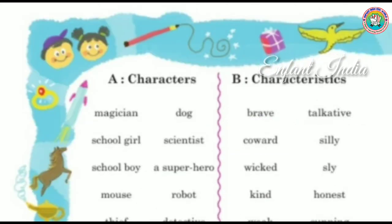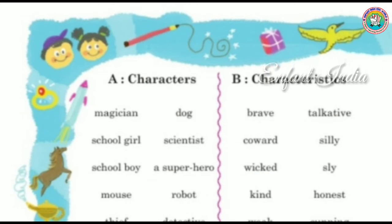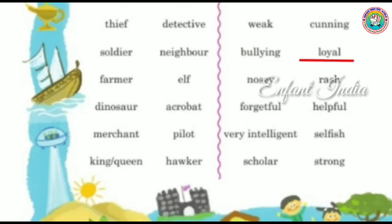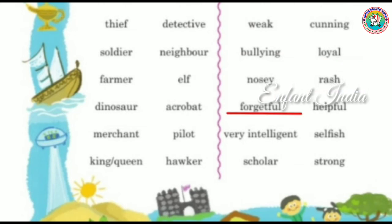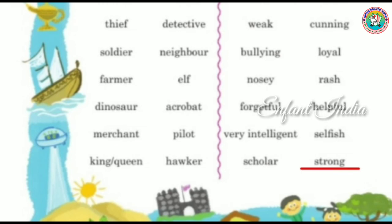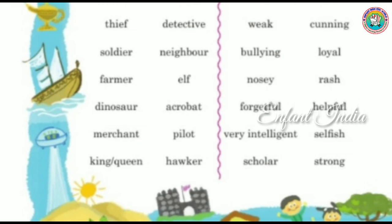Now let's see Column B. The character qualities include: Wicked, Sly, Kind, Honest, Weak, Cunning, Bullying, Loyal, Nosey, Rash, Forgetful, Helpful, Very Intelligent, Selfish, Scholar, and Strong. These qualities are for Column B.